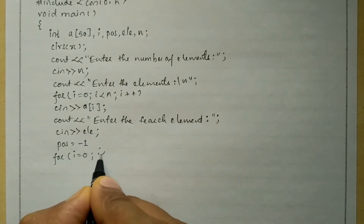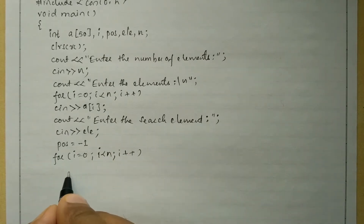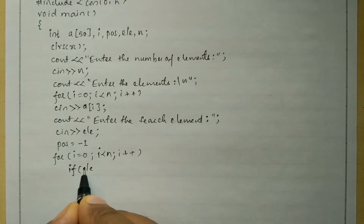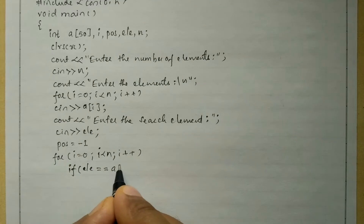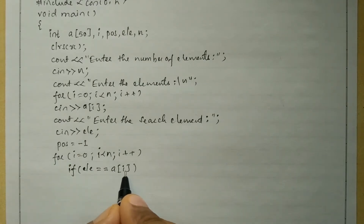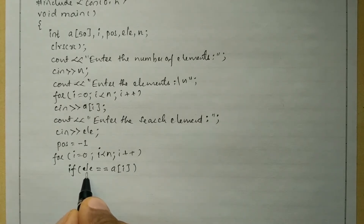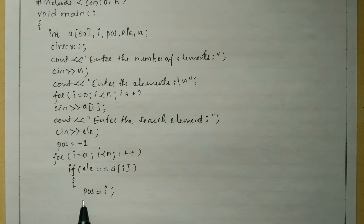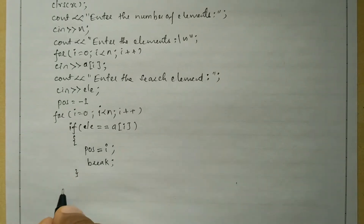For i equals zero, i less than n, i plus plus. Inside this iterative statement we have one selection statement — if statement. We check: if element ele is equal to a of i. We start from a of 0, 1, 2, 3, and so on up to n minus 1. If any index value matches the element, that position is returned. So inside the curly braces: pos equals i, and then we write break so that control exits the loop once the element is found.